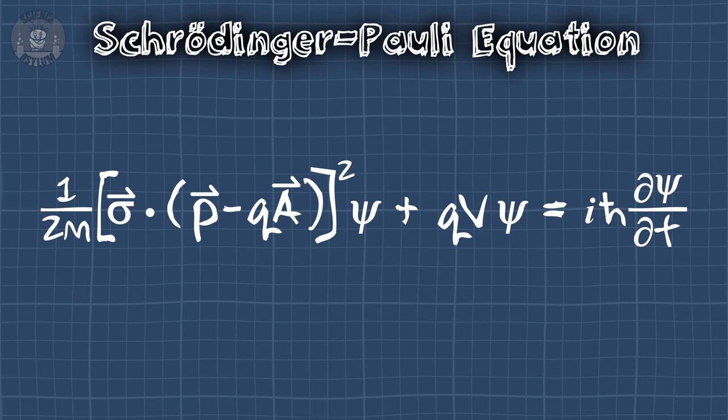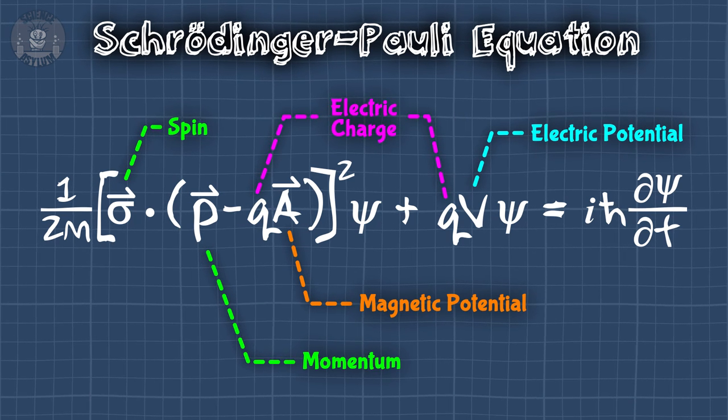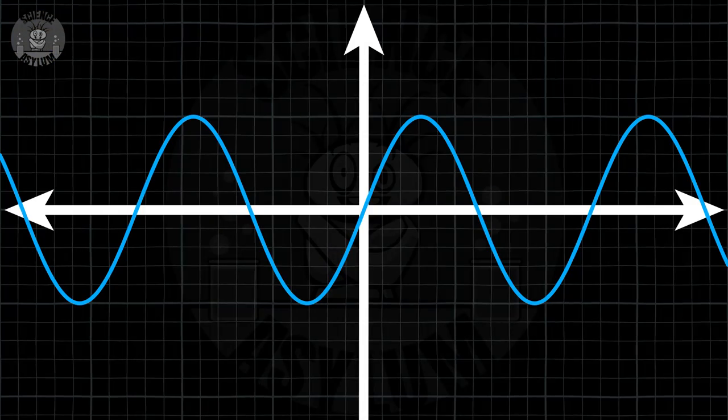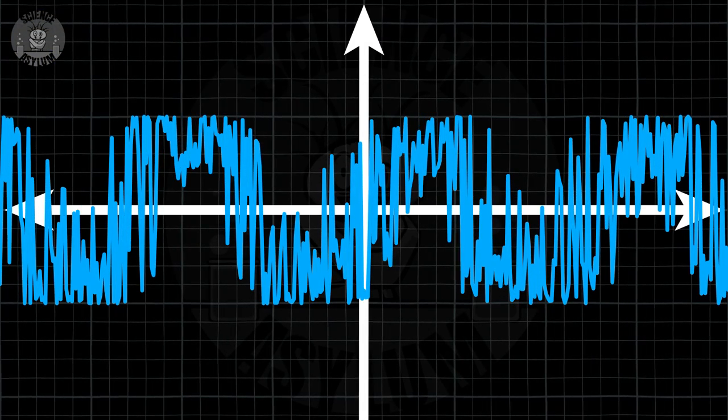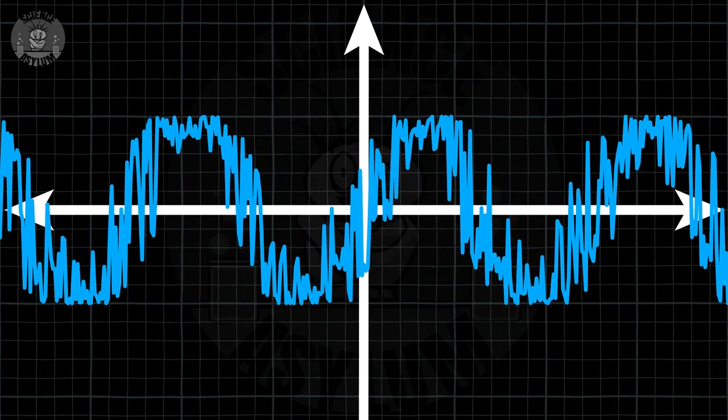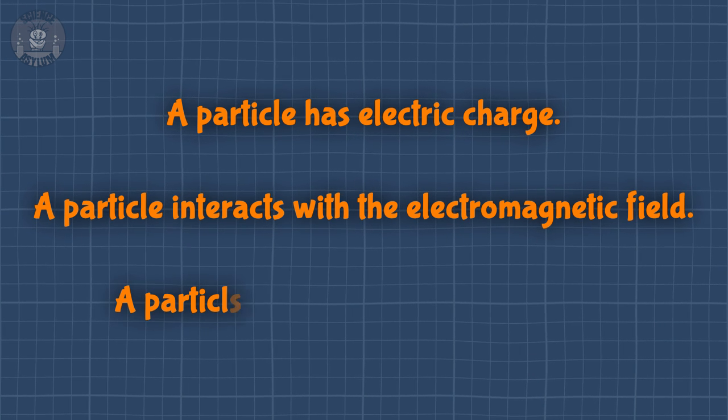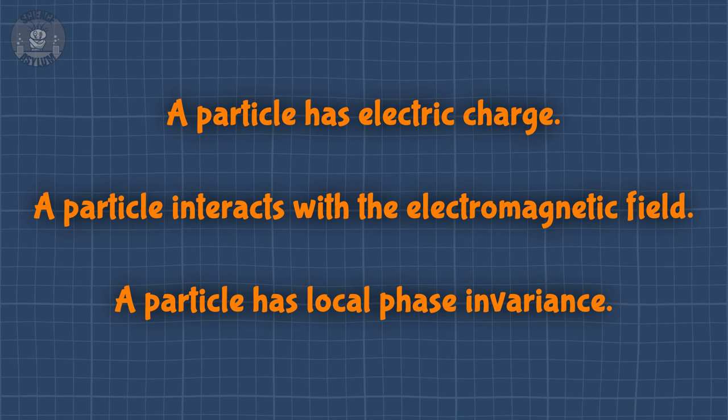The adjusted Schrodinger equation looks like this. Yes, it's nastier, but it finally applies to charged particles with non-zero spin. It still doesn't apply to relativistic particles, but that's a topic for another day. Though oddly enough, this adjustment does fix our phase shift problem. The local phase shift turned our particle's wave into this, but the electromagnetic interaction turns it back into this. The electromagnetic potentials give charged particles local phase invariance. If a particle has electric charge, then it interacts with the electromagnetic field and has local phase invariance. All three of these statements are 100% equivalent. Charged particles have local phase invariance. Neutral ones don't. No exceptions!